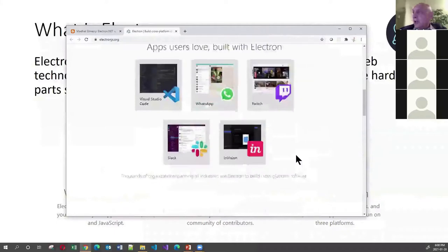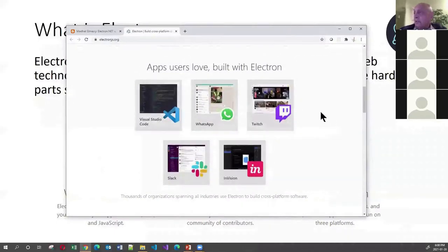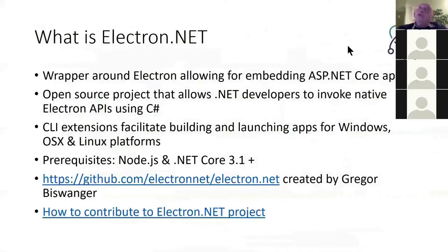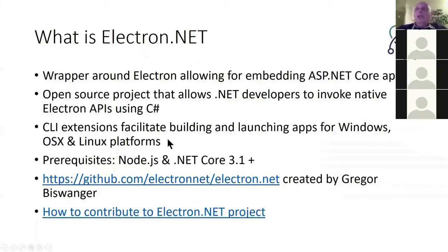On the Electron site you can see that apps like Visual Studio Code, WhatsApp, Twitch, and Slack were created using Electron. If you want to develop using Electron, you have to work with JavaScript. However, there is an open source project called Electron.NET — a wrapper around Electron allowing you to embed ASP.NET Core apps, meaning you can use C# to build your application. There are CLI extensions that facilitate building and launching apps for Windows, macOS, and Linux, so you build one app and deploy it on all three platforms.